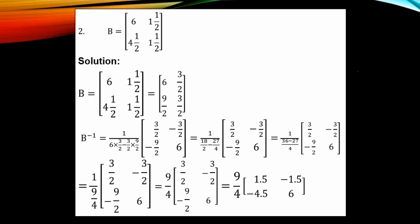For number 2, we are looking for the same inverse. This is Matrix B with mixed fraction entries. Let's convert them to improper fractions. Multiply 1 by 2, you have 2, add it to 1 — that is 3 over 2. Similarly, multiply 2 by 4 and add 1 — you have 9 over 2. The other entry is also 3 over 2. The inverse is denoted as follows.